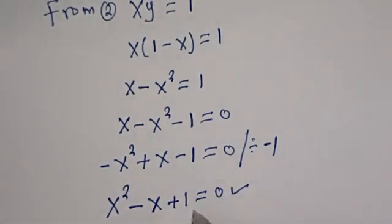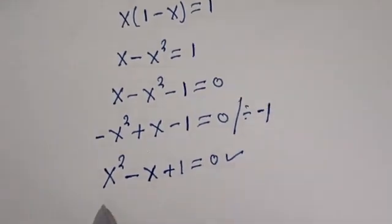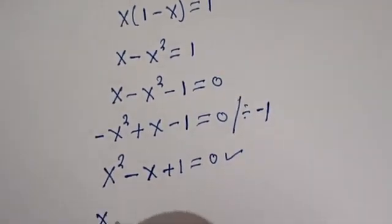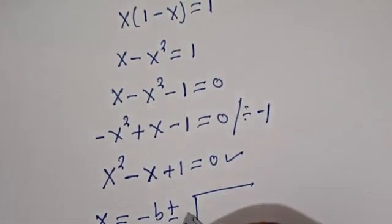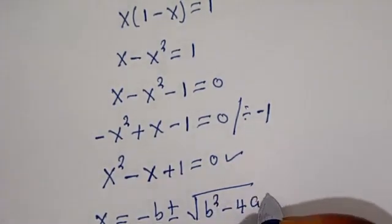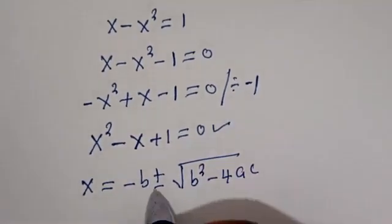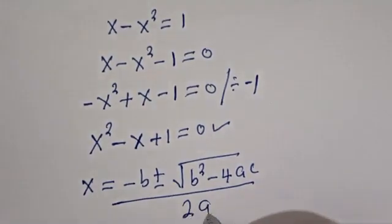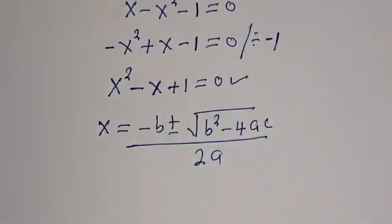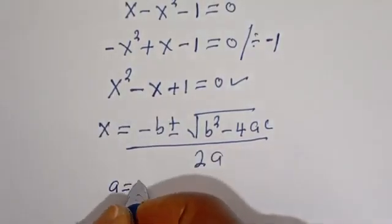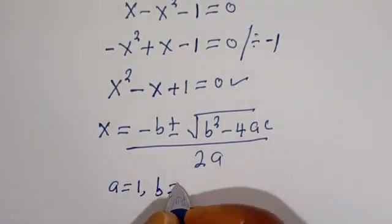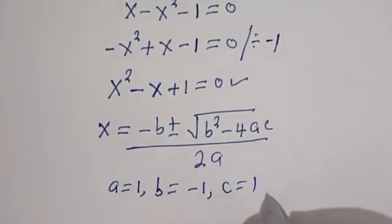This is a quadratic equation which can be solved using the quadratic general formula: X is equal to minus B plus or minus square root of B squared minus 4AC, divided by 2A. From this equation, A is equal to 1, B is equal to minus 1, C is equal to 1.